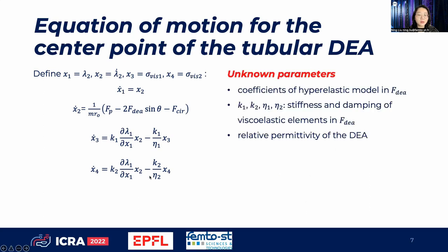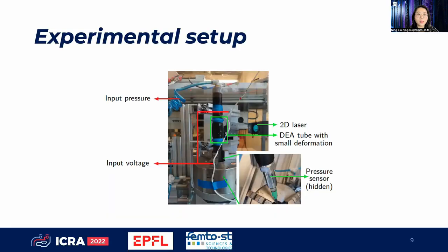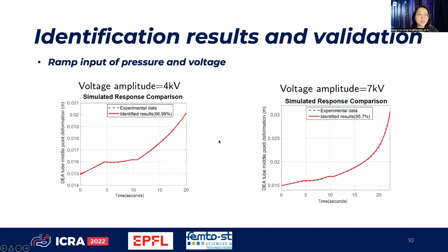After the establishment of the model, several parameters are unknown and need to be identified. The experimental setup is presented here. The Tubular DEA is activated by both applied pressure and applied high voltage, and the radial deformation is measured by a 2D laser. The identification is carried out with two types of input signals. We first apply a ramp input to identify the hyper-elastic coefficients. With input voltages of amplitude 4 kV and 7 kV, our model achieves a good fitness.